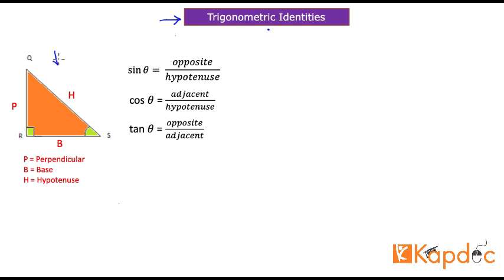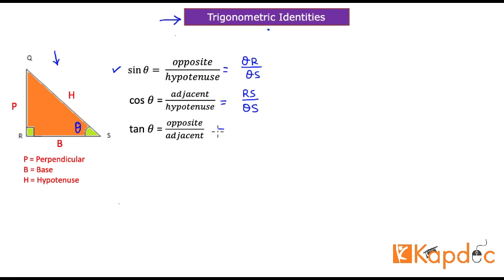Take a look at this diagram — we have a right angle triangle. If we keep angle theta as the reference angle, then sine theta is the opposite to hypotenuse ratio: QR divided by QS. Likewise, cos theta is adjacent to hypotenuse: RS divided by QS. And tangent theta is opposite divided by adjacent: QR divided by RS. These simple relations are the building blocks in trigonometry.